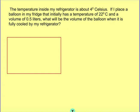This problem says that the temperature inside my refrigerator is about 4 degrees Celsius. If I place a balloon in my fridge that initially has a temperature of 22 degrees Celsius and a volume of 0.5 liters, what will the volume of the balloon be when it is fully cooled in my refrigerator? This one's dealing with a change. It's going from 22 degrees Celsius to 4 degrees Celsius, from outside the fridge to inside the fridge. Whenever you're dealing with a change, it's going to be a combined gas law problem.